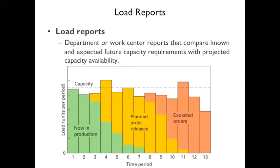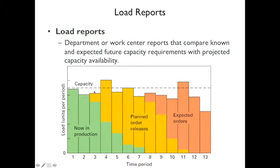Load reports show what you have in production, your planned orders, and your expected orders. At a given point you know how much is in production, but you may notice that a future period is over capacity. You might want to do full production earlier to build up that capacity. Similarly, further out you may expect above-capacity demand, so you'd want to move some of that production forward.